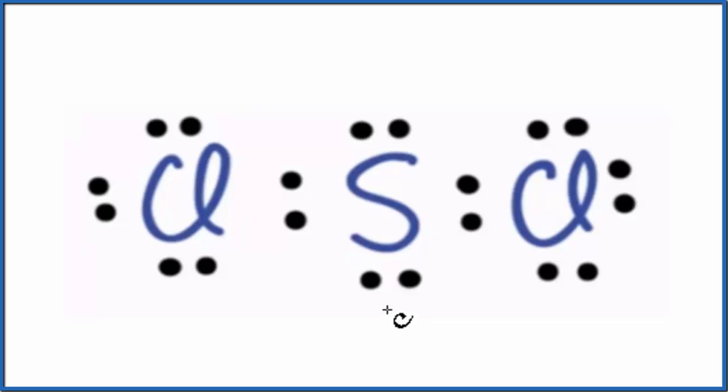The first thing we need when we look for the molecular geometry is a good Lewis structure, a valid Lewis structure. So this is the Lewis structure for SCL2. If you need help, there's a link in the description how to write this Lewis structure.